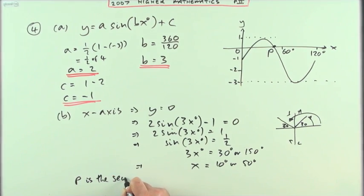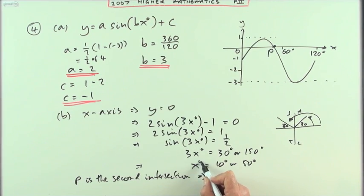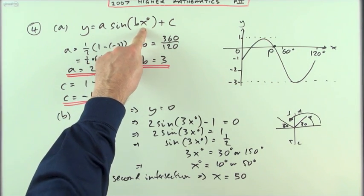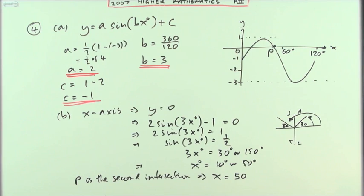P is the second intersection, which means, and at this point I've noticed I should have left the degrees in, it's a real pain when it's in degrees. If it says degrees, then x itself is just a number. P is the second intersection, which means x is the second one, which is just the 50. Because x was just a number, the degrees sign was there already.